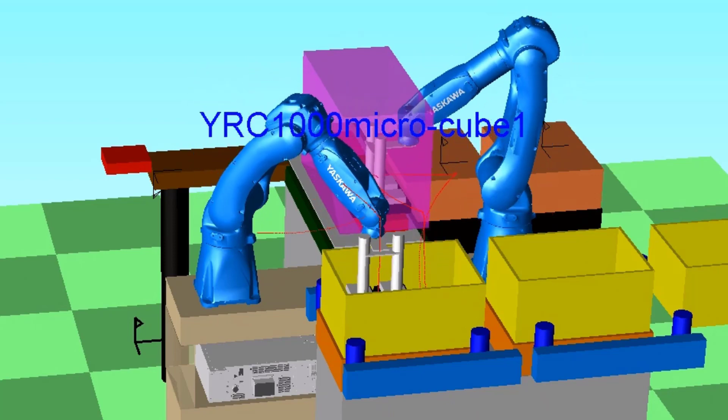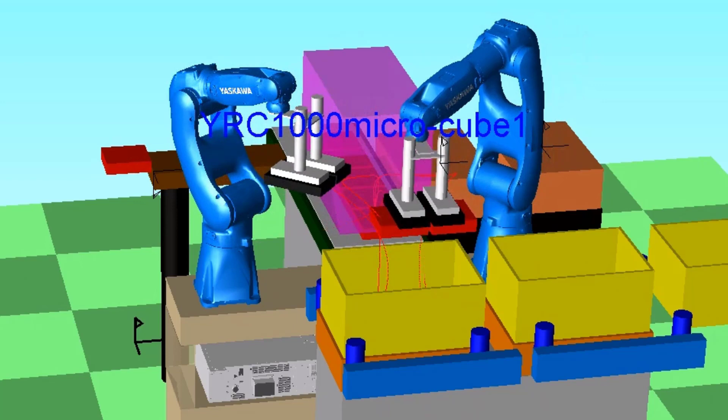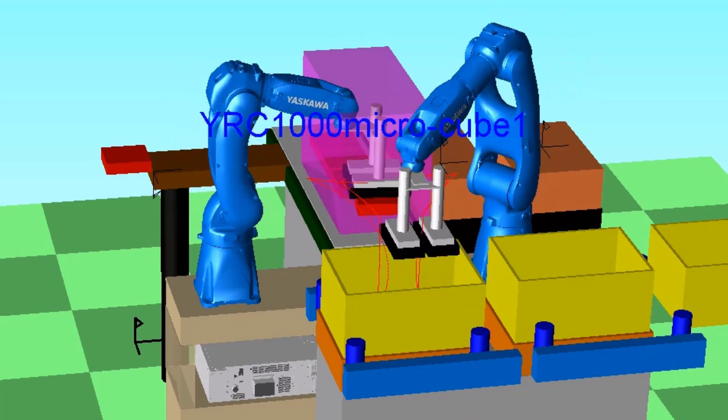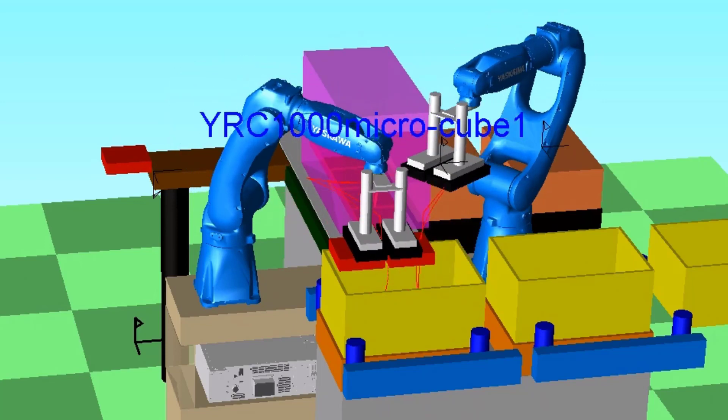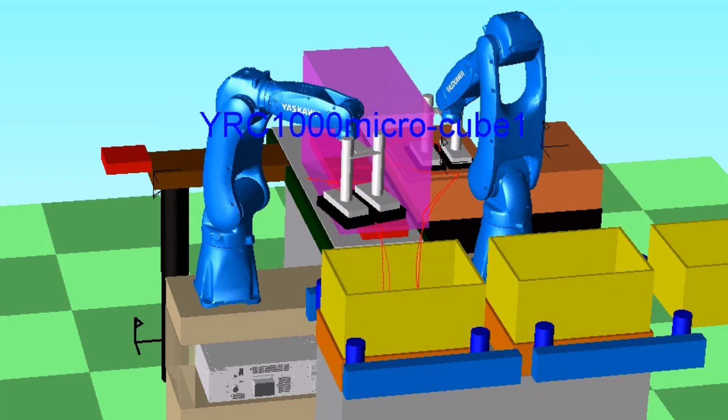Interference zones can also be used when multiple robots share an overlapping workspace. They allow the controller to programmatically reserve the zone for a particular mechanism, and thus prevent entry and possible collision with another mechanism.